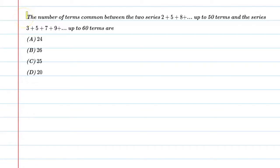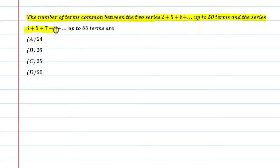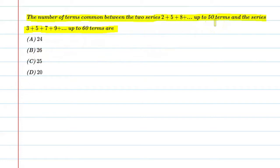Hello students, let's solve this question. The number of terms common between the two series 2 plus 5 plus 8 up to 50 terms, and the series 3 plus 5 plus 7 plus 9 up to 60 terms. There are two series — one up to 50 terms and the other up to 60 terms. We need to find how many common terms come from these two.